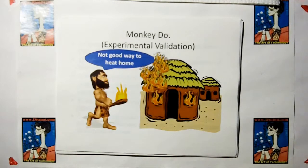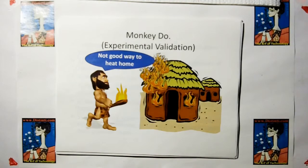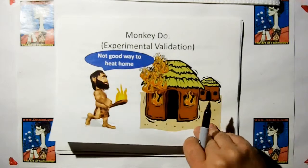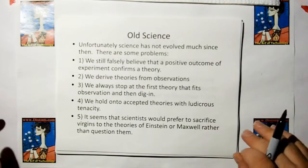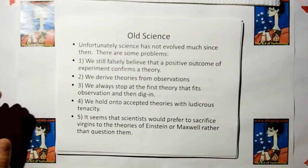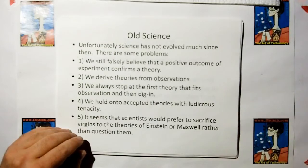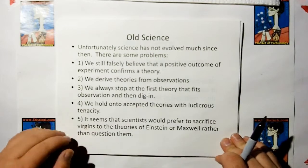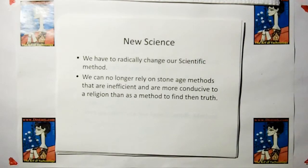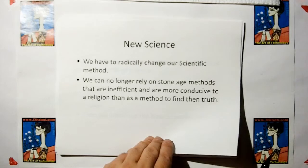Science has been with us since the beginning. The mere fact that science is nothing more than monkey see, monkey do. Unfortunately, we haven't evolved much from monkey see, monkey do. We still falsely believe that a positive outcome of experiment confirms a theory, which I'm going to show you is completely wrong. We're still deriving theories from observations which is completely backwards. We always stop at the first theory that fits the observation and hold on to accepted theories with ludicrous tenacity.